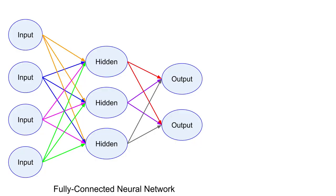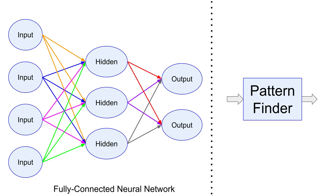Previously in this series, we built a basic neural network — a fully connected neural network, because all the nodes in one layer are connected to every node in the previous layer. Neural networks are useful tools in machine learning because they are good at finding patterns. We can think of them as a blue box which can find patterns from the data provided, or pattern finders.